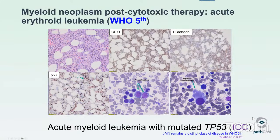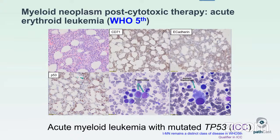What we used to refer to as therapy-related myeloid neoplasms: in the WHO it's still regarded as a distinct category, and having a post-cytotoxic therapy myeloid neoplasm is regarded as prognostically important. In the ICC, it's not a separate category, but they do advise it should be commented on. In both classifications, you would classify the case with its genetics — but in the WHO, it would be post-cytotoxic therapy first, then the genetic classification. In the ICC, genetics come first and post-therapy comes second.